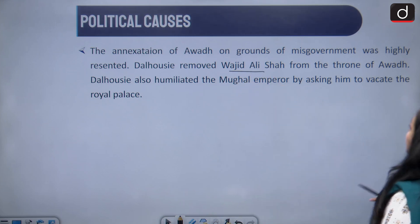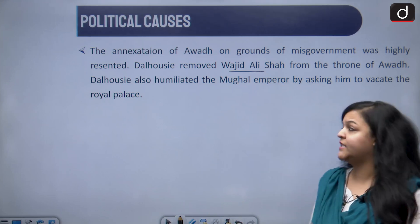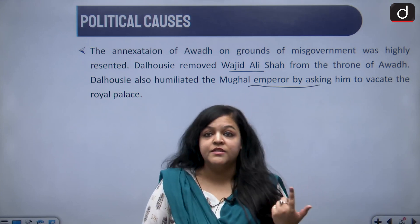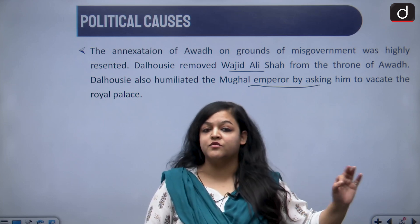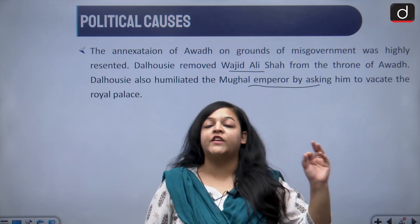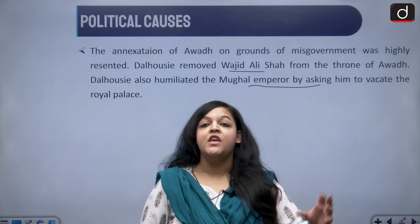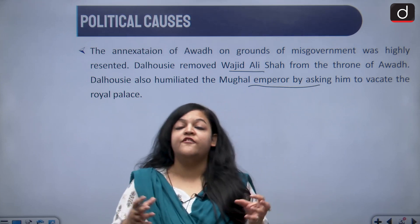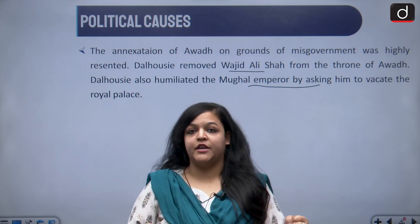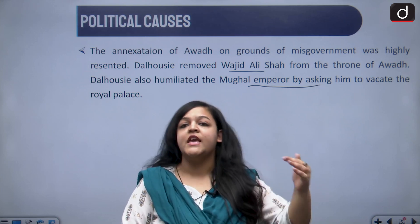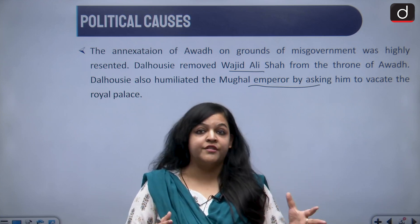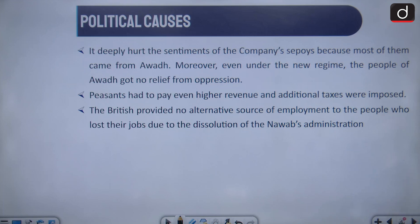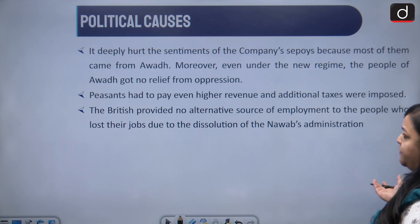Dalhousie removed Wajid Ali Shah from the throne of Avadh and also humiliated the Mughal Emperor by asking him to vacate the royal palace and refrain from using his royal titles. This was seen as a blow to the national fabric because Bahadur Shah Zafar was considered the epitome of authority — a representative of the Mughals — and this deeply hurt the sentiments of the company's sepoys, most of whom came from Avadh.